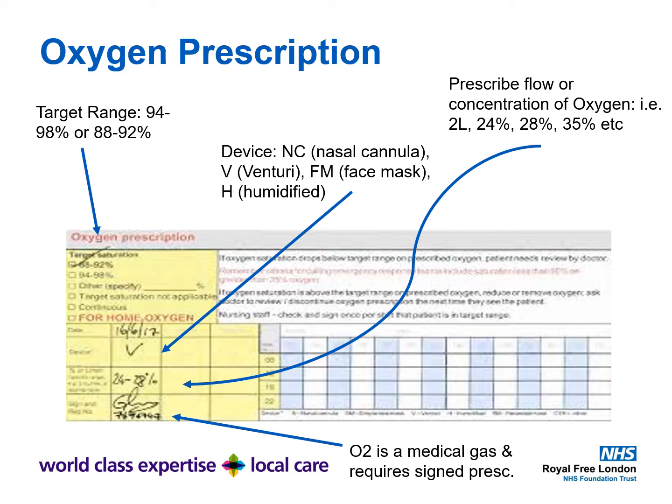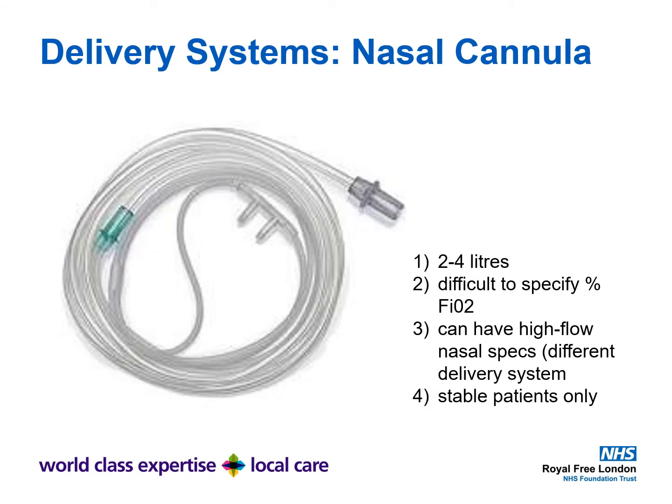Nasal cannulae are designed for flows of 2 to 4 litres. It's difficult to specify a precise FiO2 — for example, 2 litres via nasal specs is not the same as 24% oxygen. High-flow nasal specs can provide a little PEEP (positive end-expiratory pressure), but this requires a very different system. Nasal cannulae should only be used in stable patients.